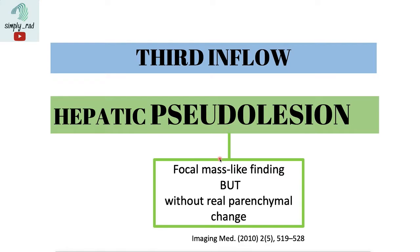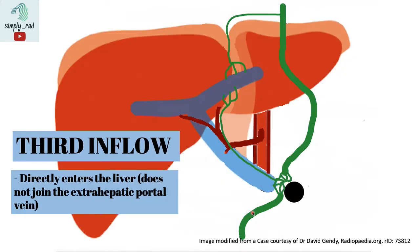Pseudo because it's a focal mass-like finding but without real parenchymal change. Notice here that the vessels drawn in green bypass the extrahepatic portal vein.